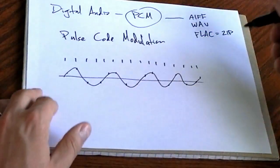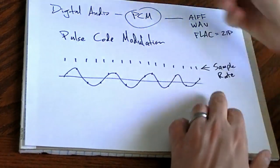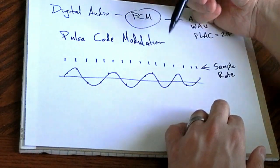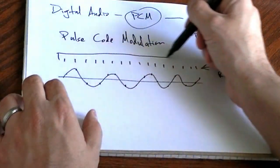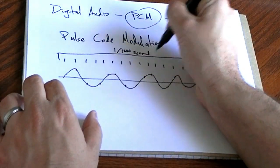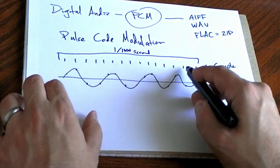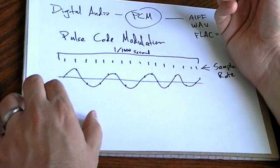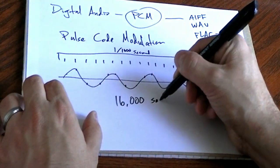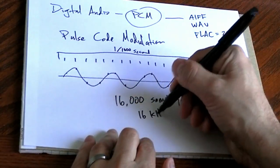So in PCM, you've got the sample rate and that is how often you take these snapshots. For example, if this amount of time is one-thousandth of a second, there should be 16 samples per thousandth of a second. So this particular sample rate would be 16,000 samples per second. And that is the same thing as saying it has a sample rate of 16 kilohertz.